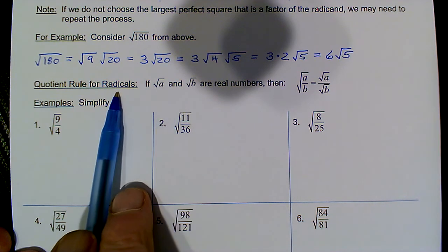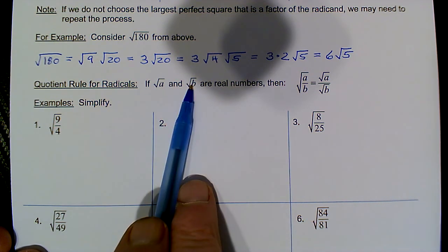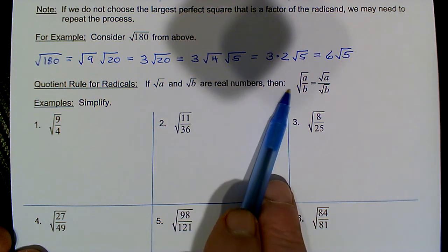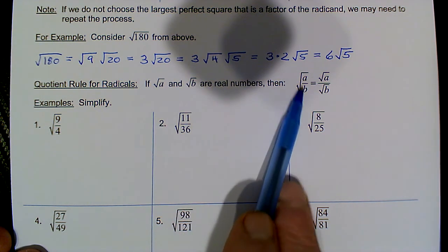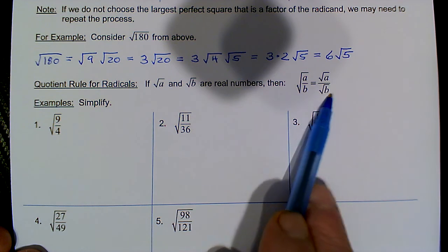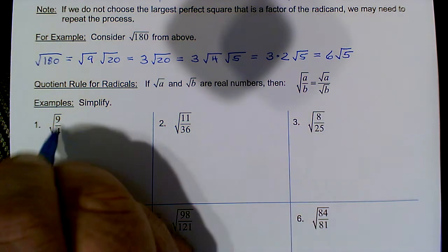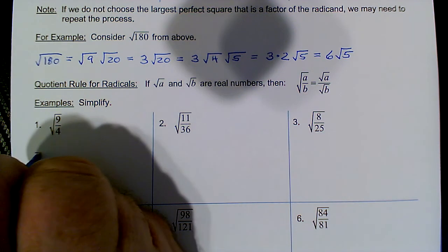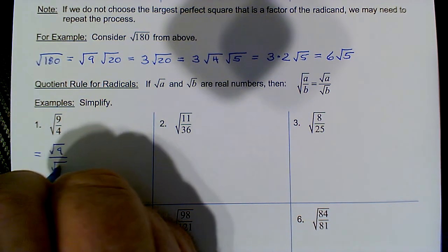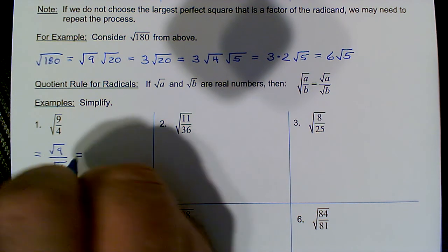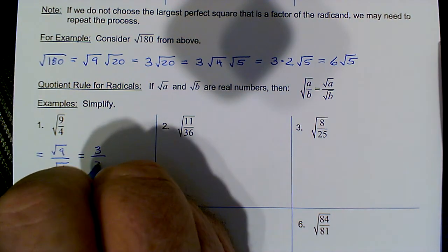Now the quotient rule for radicals: if the square root of a and the square root of b are real numbers, then the square root of a quotient equals the square root of the numerator over the square root of the denominator. Anytime you see a fraction under a radical, take the square root of the numerator over the square root of the denominator. For example, √(9/4): the square root of 9 is 3, square root of 4 is 2, so we get 3/2.